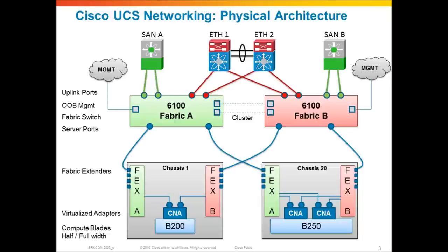We can have up to 20 chassis today connected into a single UCS system. In each chassis, you can have half-width or full-width blades, and each blade can have one or multiple adapters if it's a full-width blade. That adapter is dual-ported with 10-gig traces that swing from one port to Fabric A and another port to Fabric B. The Fabric Extender that these adapters connect to is really just a logical extension of the Fabric Interconnect it's connected to — there is no console port, no IP address, software image, or configuration file to worry about. It's really a zero-touch stateless device. The current supported chassis limit today is 20 chassis, which will grow in the future — it's a support limit, not a hardware limit.